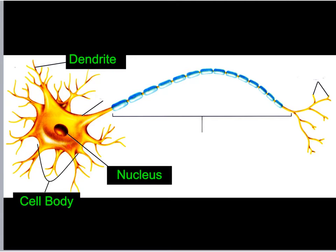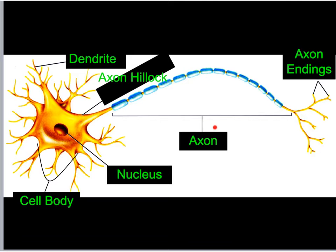The other thing coming off the cell body besides the little branches called dendrites is this really long structure that ends in branches — that is called the axon. It narrows from what's called the axon hillock, which leads to the axon, and then we have the axon endings.